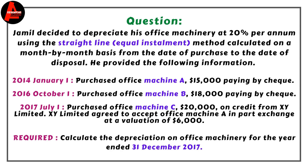He provided the following information: on 1st January 2014 he purchased Machine A, on 1st October 2016 he purchased Machine B, and on 1st July 2017 he purchased Machine C. The requirement is to calculate the depreciation on office machinery for the year ended 31st December 2017.